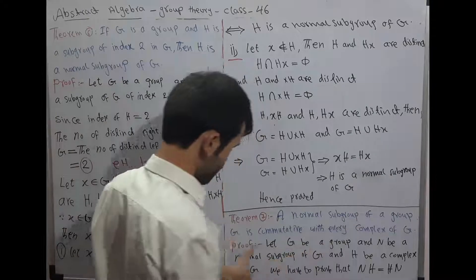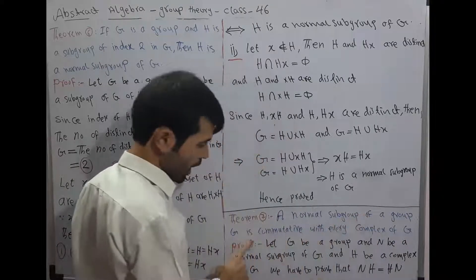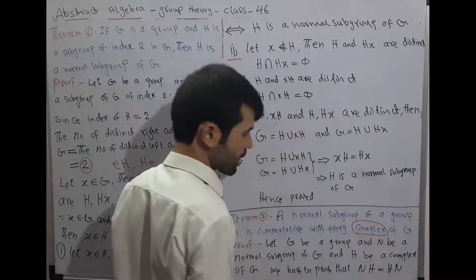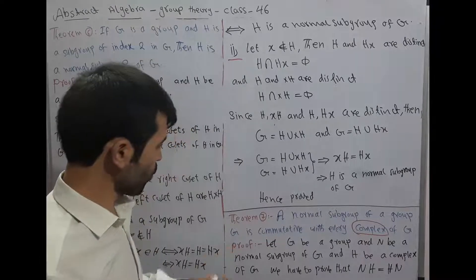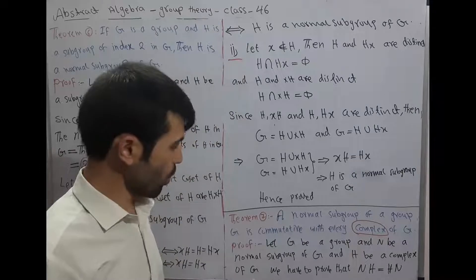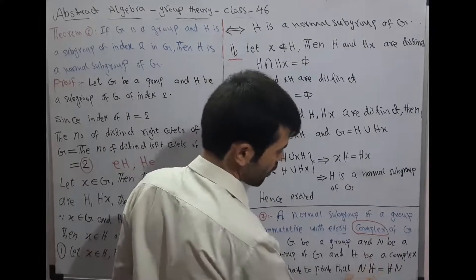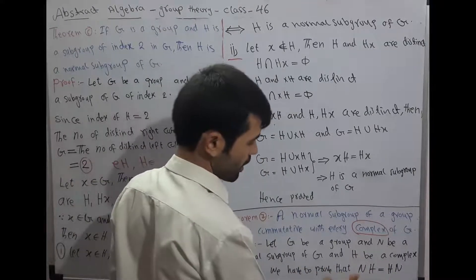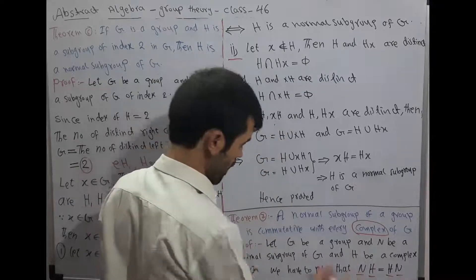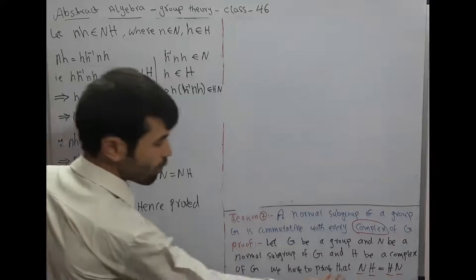Theorem 7: A normal subgroup of a group G is commutative with every complex of G. Recall that every subset of a group G is called a complex of G. Proof. Let G be a group, N be a normal subgroup of G, and H be a complex of G. We want to show that N and H are commutative, meaning we can interchange their positions.